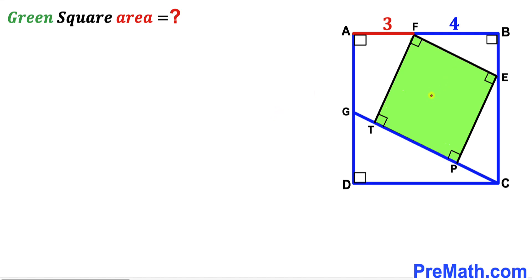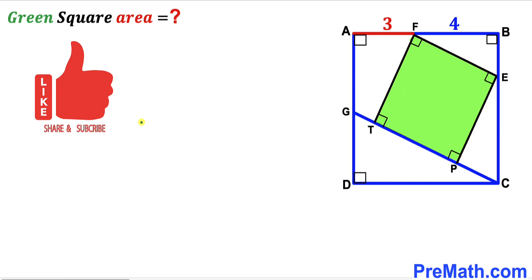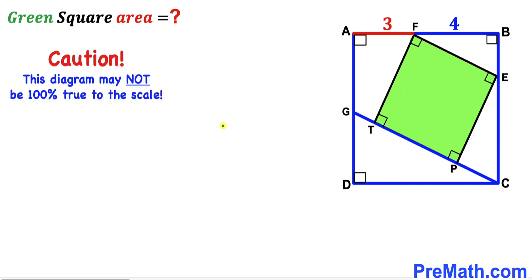Welcome to pre-math. In this video we have a green shaded square EFTP fully confined in the blue square ABCD, and a line segment GC as shown in the diagram, such that segment AF is 3 units and segment FB is 4 units. Our task is to calculate the area of the green shaded square EFTP. Please give a thumbs up and subscribe, and keep in mind that this figure may not be 100% true to scale.